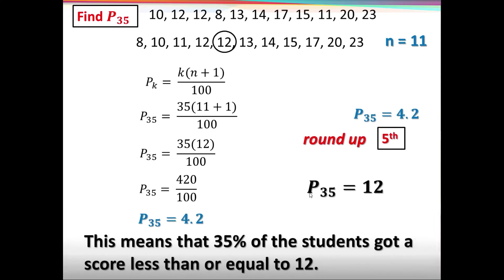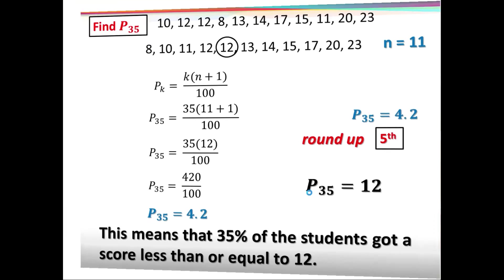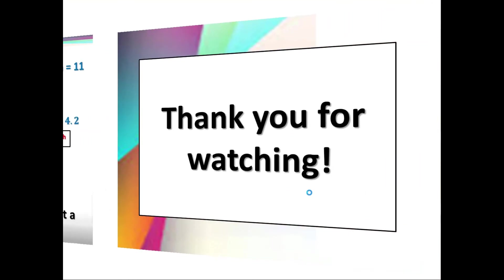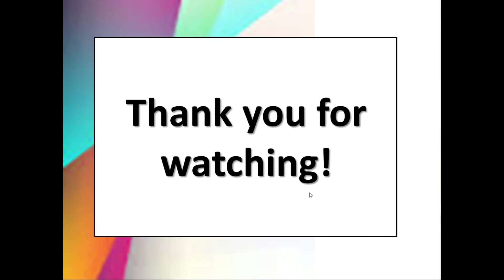This means that 35% of the students got a score less than or equal to 12. I hope it is clear how to compute and calculate using the Mendenhall and Sinscih method. Thank you for watching.